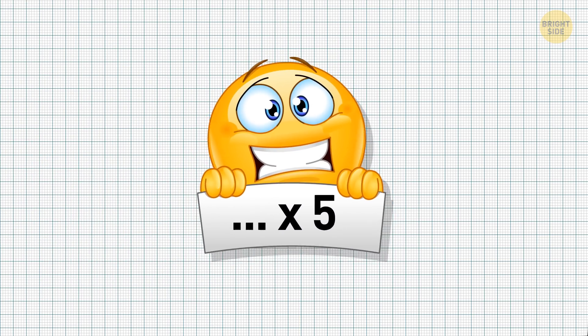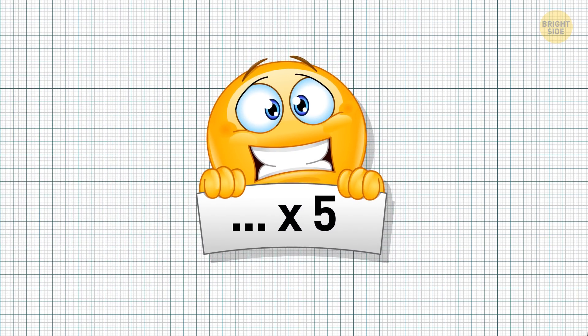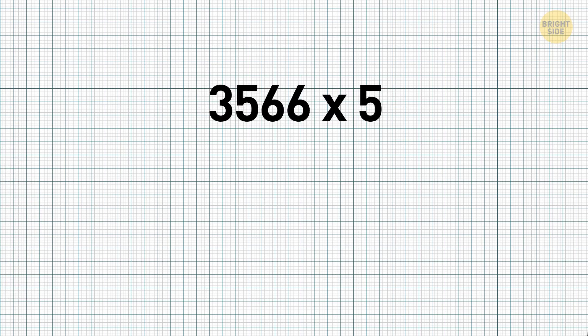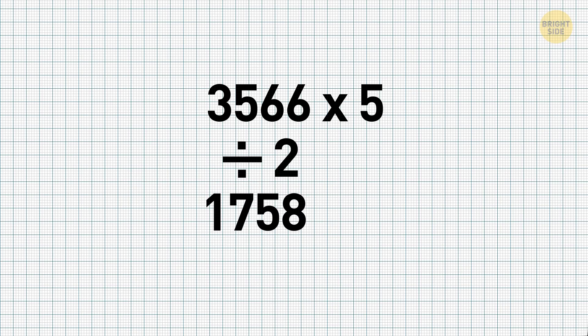A simple way to multiply any, and I mean any at all, number by 5 has probably never been mentioned to you at school. There's a slight difference in methods depending on whether the number is even or odd. Let's start with even numbers. Say you have to multiply 3,566 by 5. First, divide the number by 2, getting 1,758. Now add a 0 to it, and you've got your answer: 17,580.